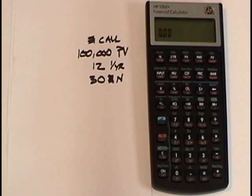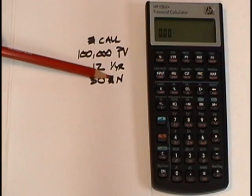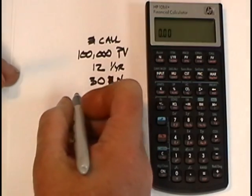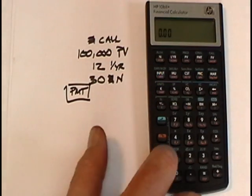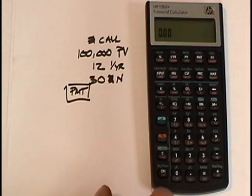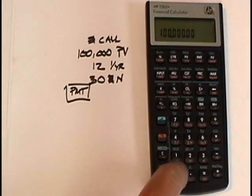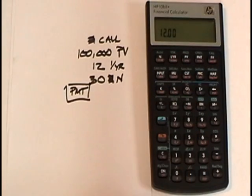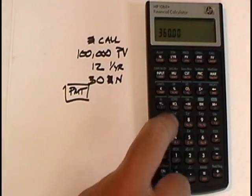Now the way that time value of money works is that you always find three pieces of information and end up solving for the fourth. So in this problem, I've been given the present value, the rate, and the term. That's three. When I solve for the fourth, I'm simply going to press the PMT button. So here's what the key presses look like. GOLD KEY CLEAR ALL. I'm in 12 payments per year. Type in 100,000. Hit PV. Type in 12 interest per year. Type in 30, which is the number of years. GOLD KEY N. I have three I solve for the fourth. Now I just press PMT. And it's a monthly payment of $1,028.61.